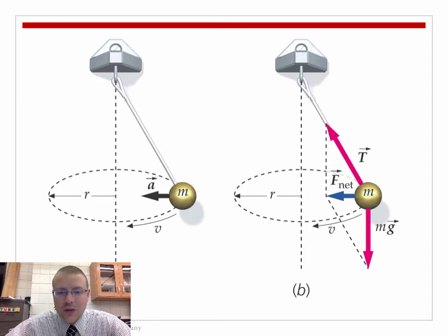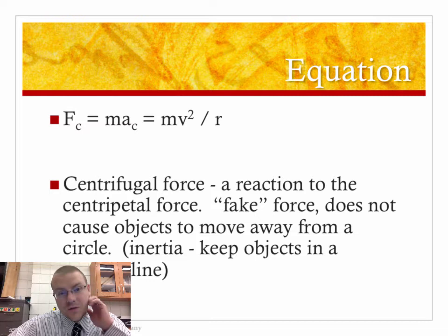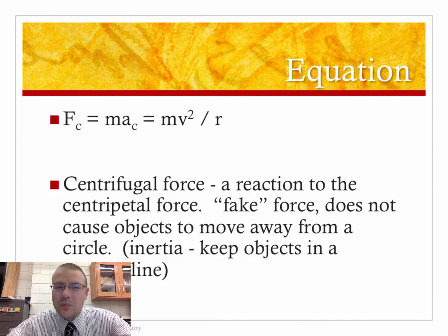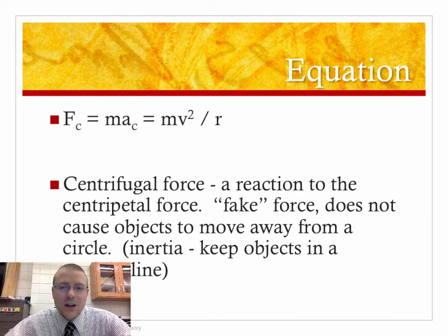In this example, there's a tension and gravity as a ball swings around. The net force is pointing in towards the center of the circle, and that net force is actually the x-component of tension — so even a part of your tension can be the force that causes circular motion. The equation for centripetal force is no different than any other net force: net force equals mass times centripetal acceleration, which gives us F = mv²/r. We are accelerating because we're constantly changing direction, not changing speed.